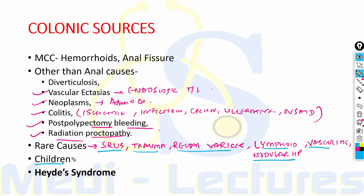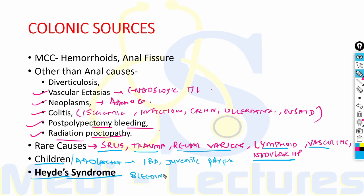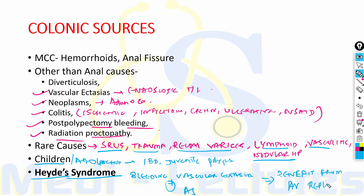In children and adolescents, the most common colonic causes are inflammatory bowel disease and juvenile polyps. There is also Heyde's syndrome — a combination of bleeding from vascular ectasia (abnormal dilated vessel) along with aortic stenosis. Importantly, patients benefit from aortic valve replacement; if we replace the aortic valve, the bleeding spontaneously resolves.